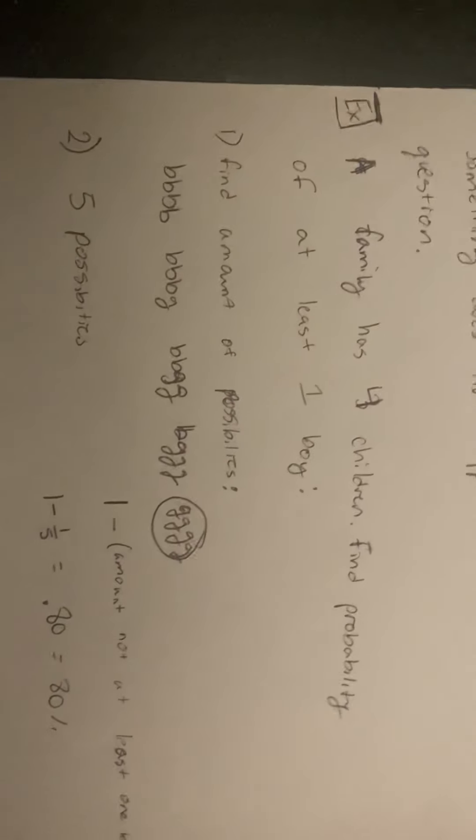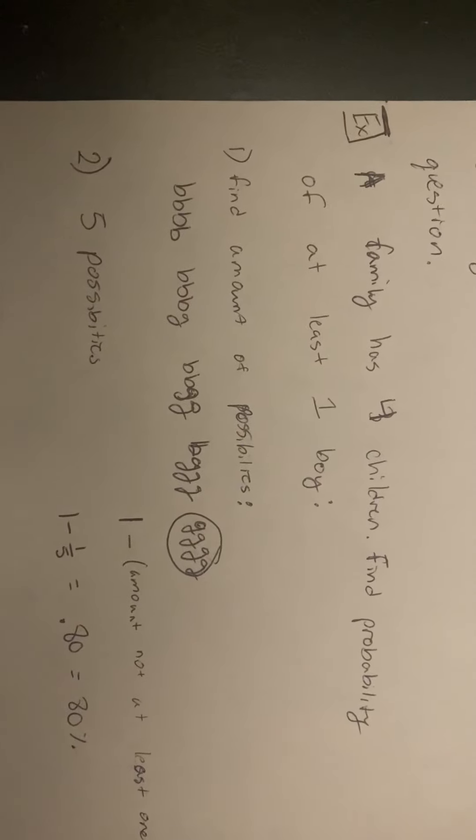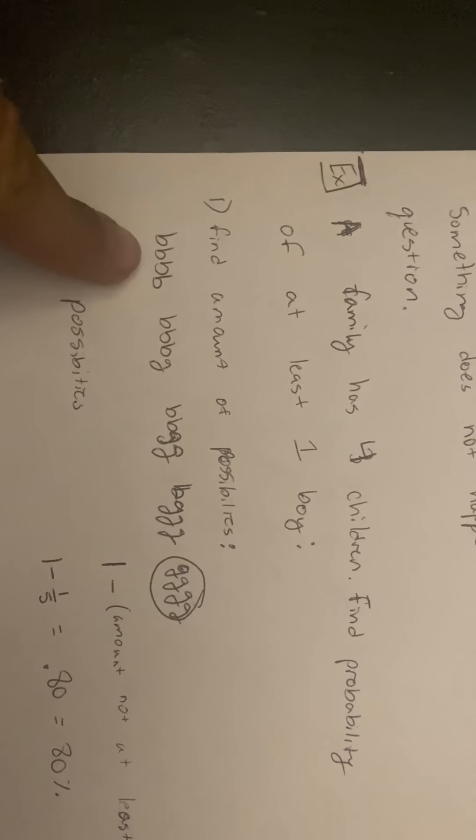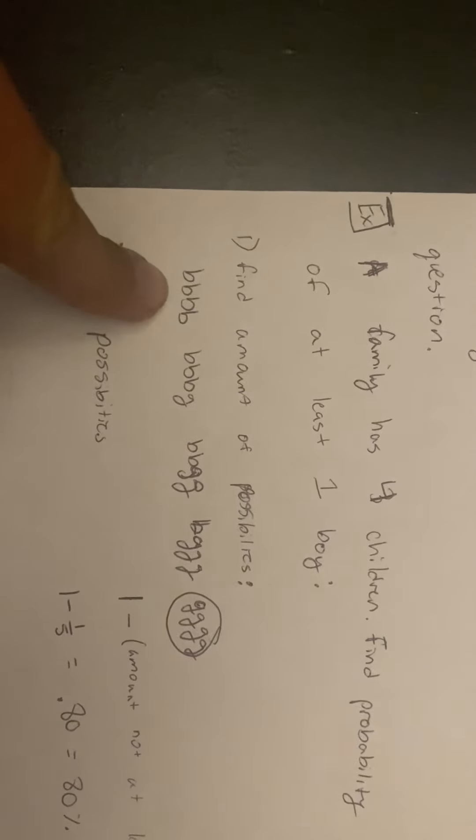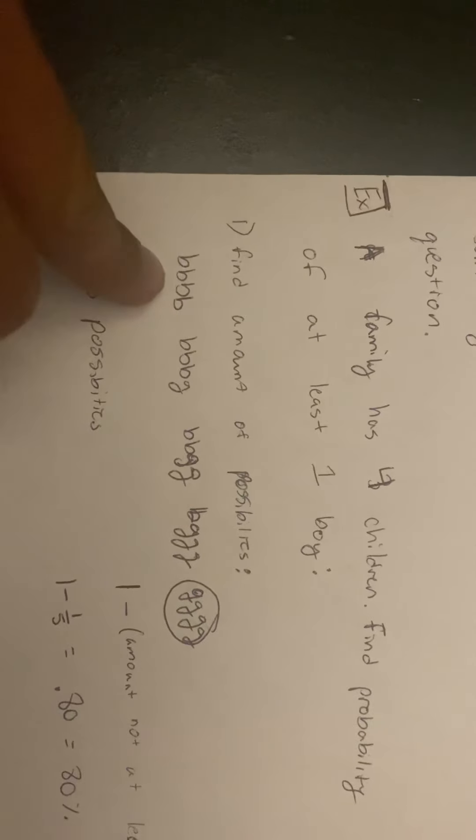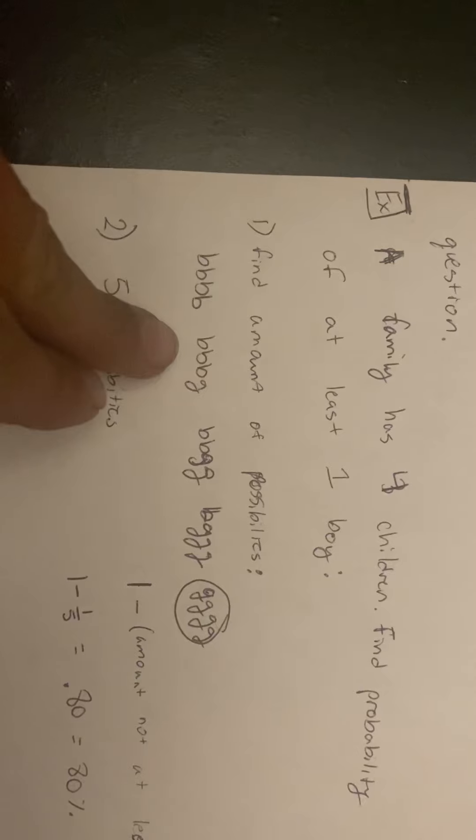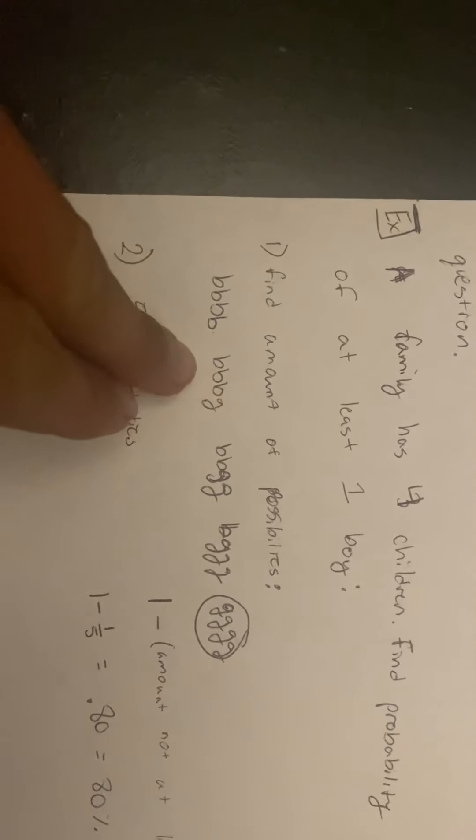To start the problem, we find the total amount of possible outcomes of having at least 1 boy. In a family of 4 children, there could be 4 boys. The next possible outcome is 3 boys and 1 girl.